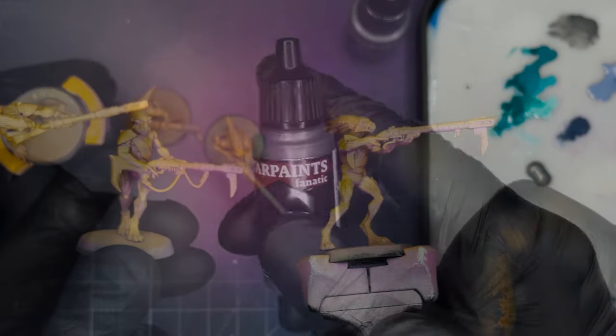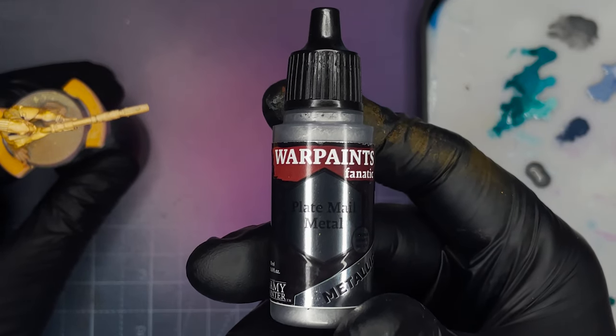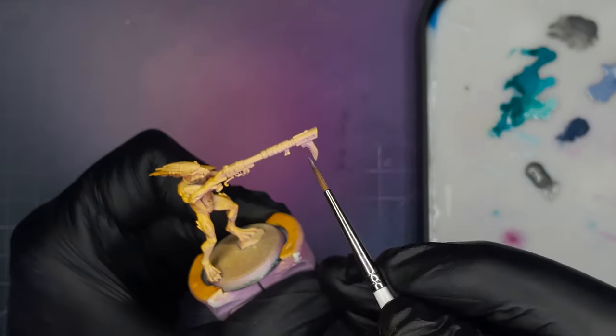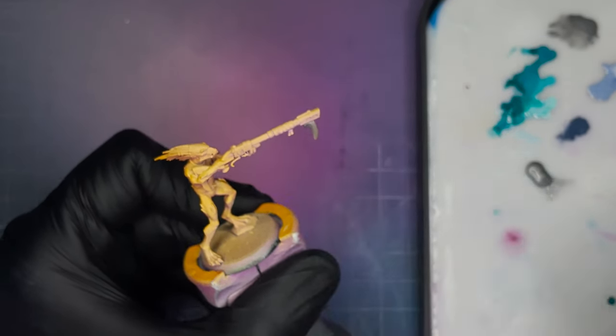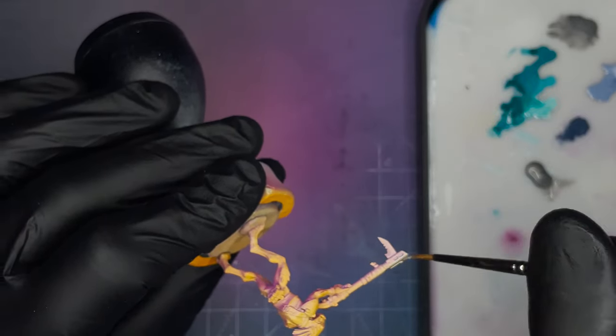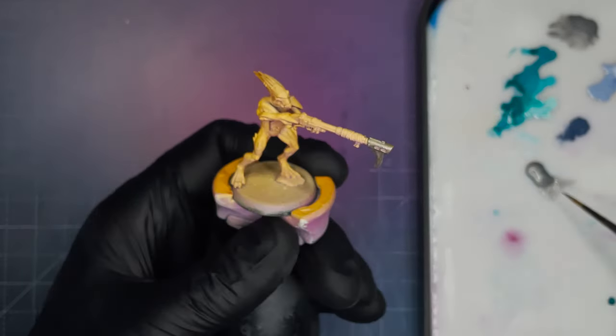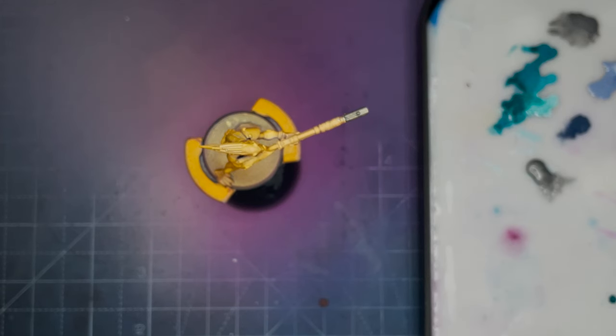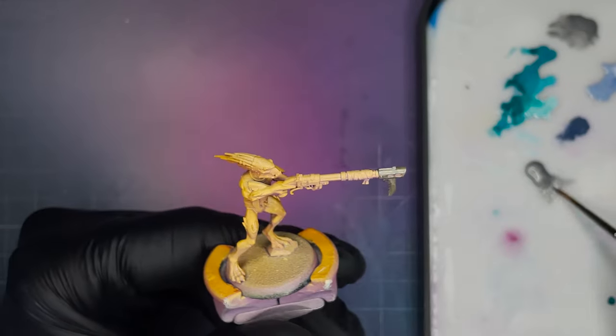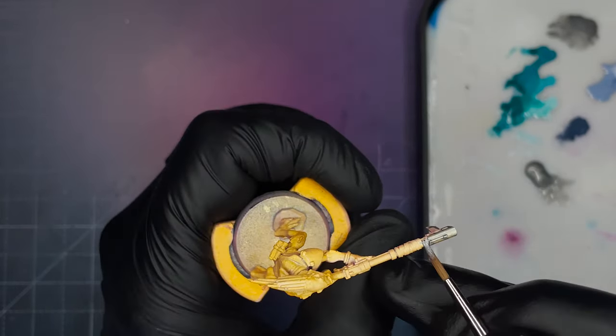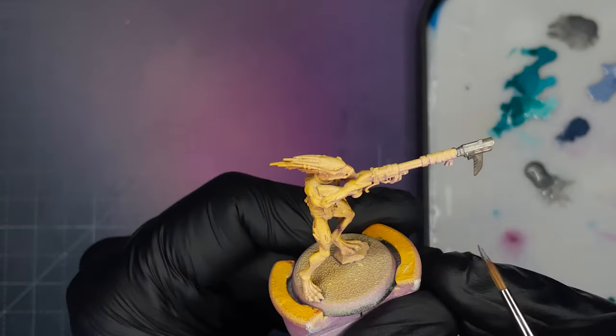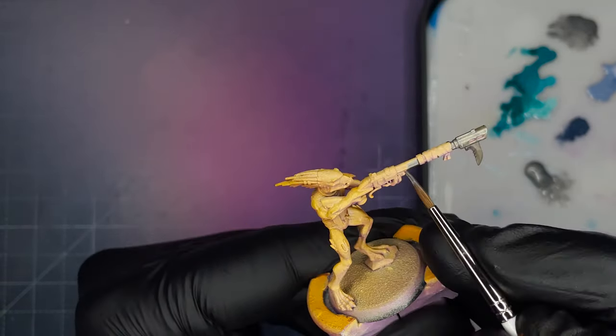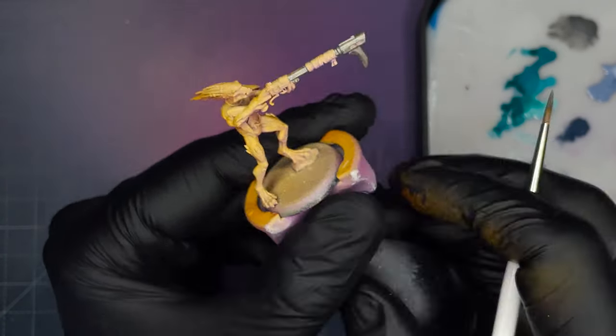Next up it's time to deal with all the metallics using Plate Mail Metal. You just need to apply this to all the parts on the model that you want to be metallic - the barrel of the gun, the shoulder pad, any knives or blades on the model, any bullets that they're carrying, and all of the wristbands and necklaces. At this point I did try painting some of these parts in gold, however I realized that the gold was way too close to the yellow skin tone, so I eventually changed all these parts to silver.